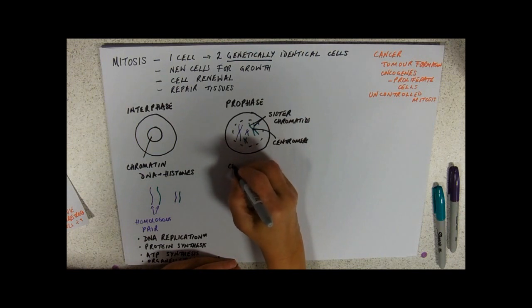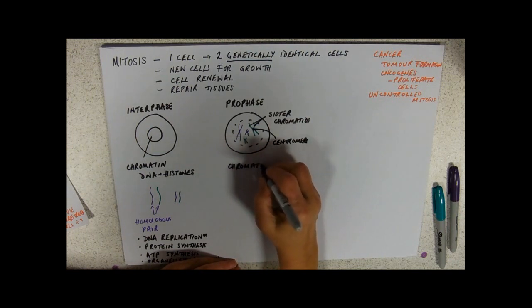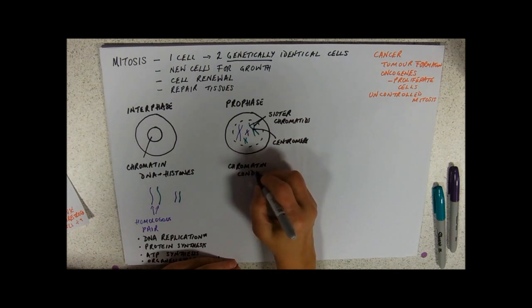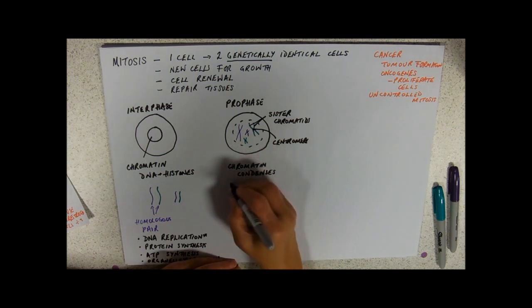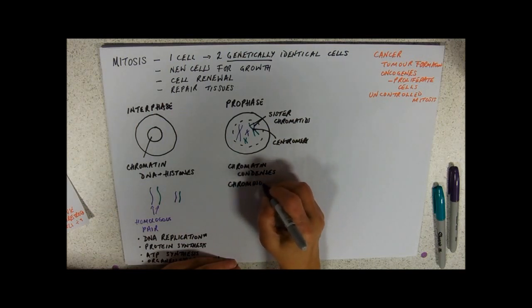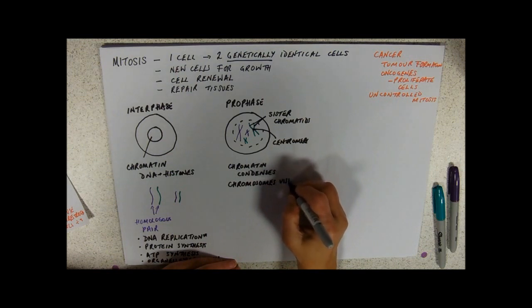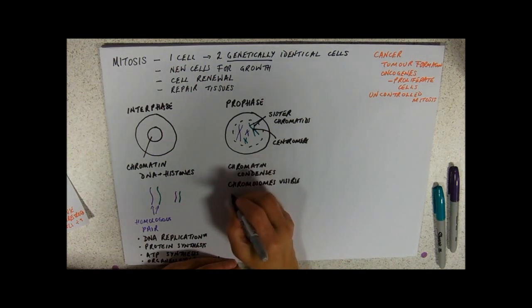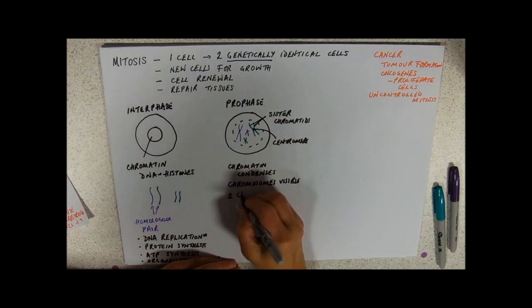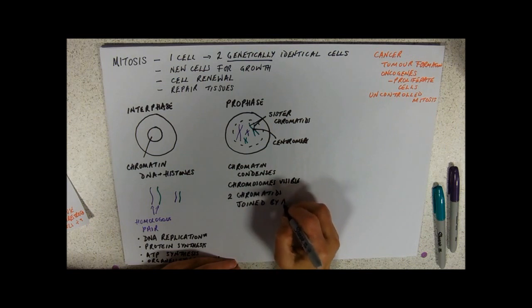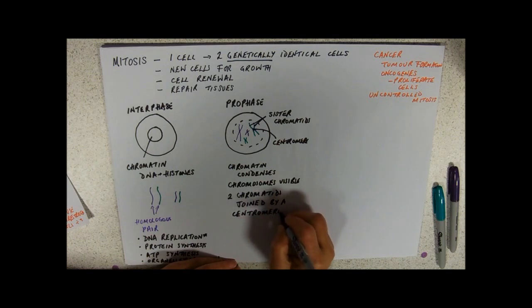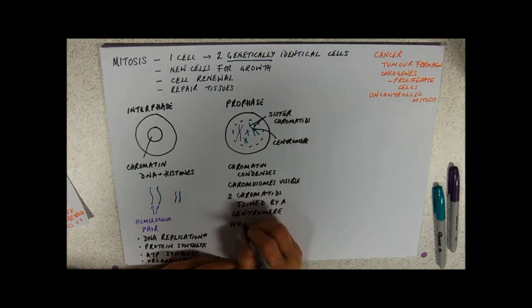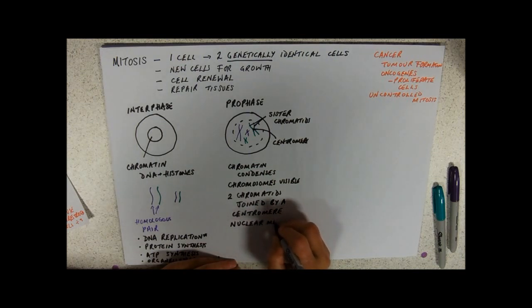So here in prophase, we've got the chromatin condensing. The chromosomes are visible. How do they appear? They appear as two chromatids joined by the central area. And at the end, the nuclear membrane disappears.